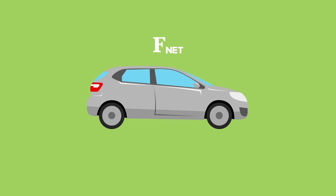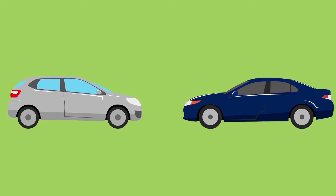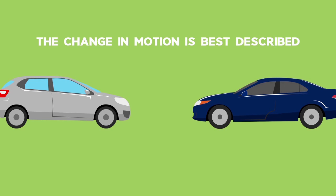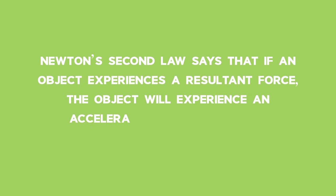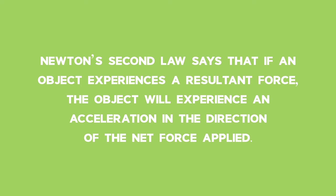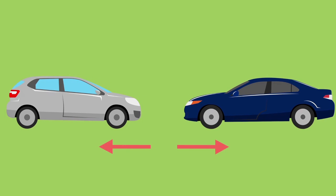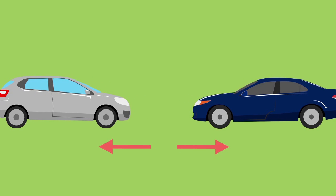Knowing that a net force is needed to change the motion of an object, it's worthwhile understanding the nature of the second law of motion when a net force occurs. When objects collide or separate from each other, there is always a force involved, and the change in motion is best described by Newton's second law. If an object experiences a resultant force, it will experience an acceleration in the direction of the net force applied. It's also worth noting that the same magnitude of force applies to both objects, except in opposite directions.